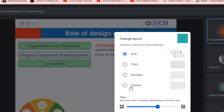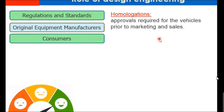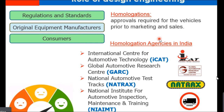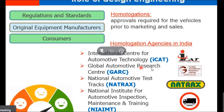Before designing or starting any design procedure for any application, it is necessary that in that particular field we know what they need and where we need to stick to it. For example, your aim may be to reduce vehicle weight, and in order to do so, if you are doing any design structure variation or using materials of less weight, it still has to meet the tests and standards. For your knowledge, these are few homologation agencies in India: ICAT, GARC, NATRAC, and National Institute for Automotive Inspection, Maintenance and Training. Wherever you design any vehicle, you give it to them, they certify it, and then it comes to the market.